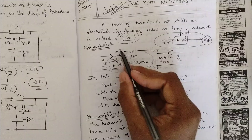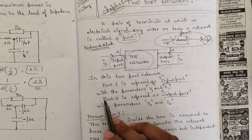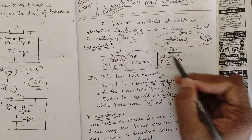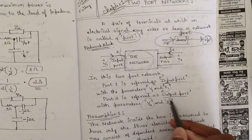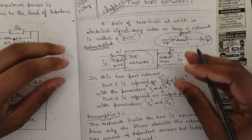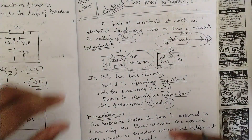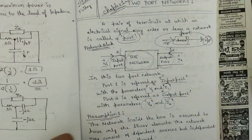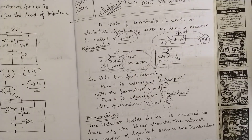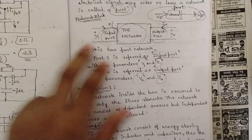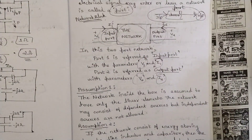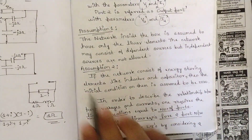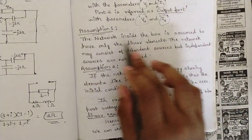Port 1 is referred to as the input port with parameters v1 and i1, and port 2 is referred to as the output port with parameters v2 and i2. Both ports feed into the network where they interrelate and provide the desired output or result.